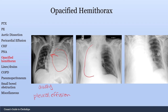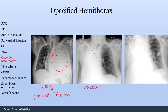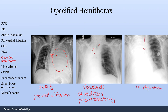In this case you have the opacified hemithorax with tracheal deviation towards that side — the differential is atelectasis, which is collapse of the lung, or pneumonectomy, the surgical removal of that lung. Because of that there's an empty space causing tracheal deviation toward that side. With no tracheal deviation, the differential would be a massive pneumonia or something causing white-out without pushing the trachea to either side.